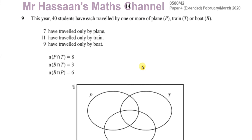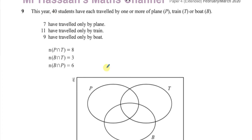The question says: this year 40 students have each travelled by one or more of plane, train or boat. So basically all those 40 students have either travelled by plane, train or boat. They're all within these three circles — none of them are outside. All 40 students must be inside these three circles.